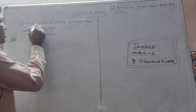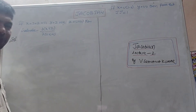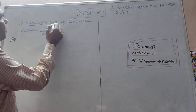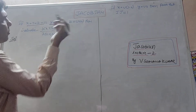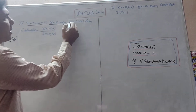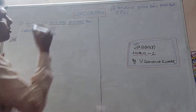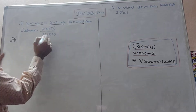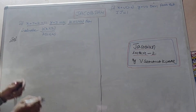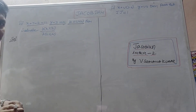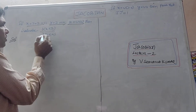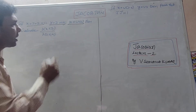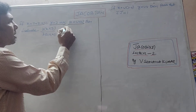We will discuss the following problem: if x plus y plus z equals u, y plus z equals uv, and z equals uvw, then evaluate the Jacobian ∂(x,y,z)/∂(u,v,w).